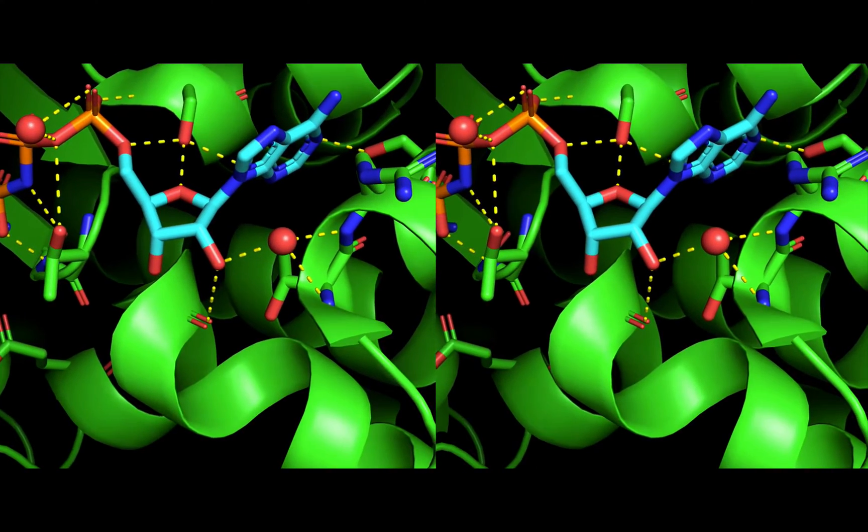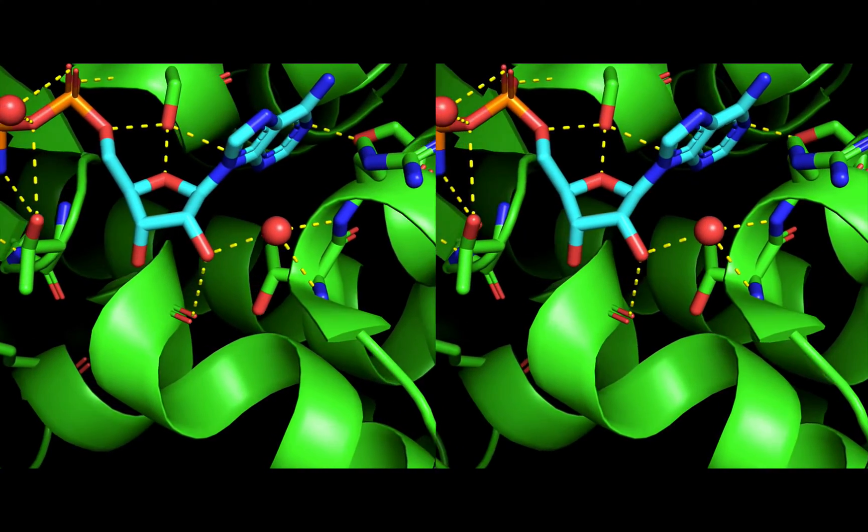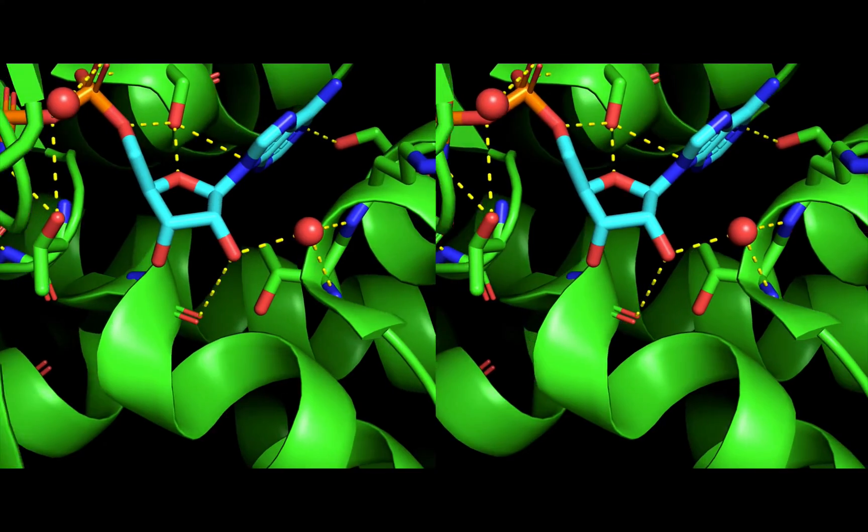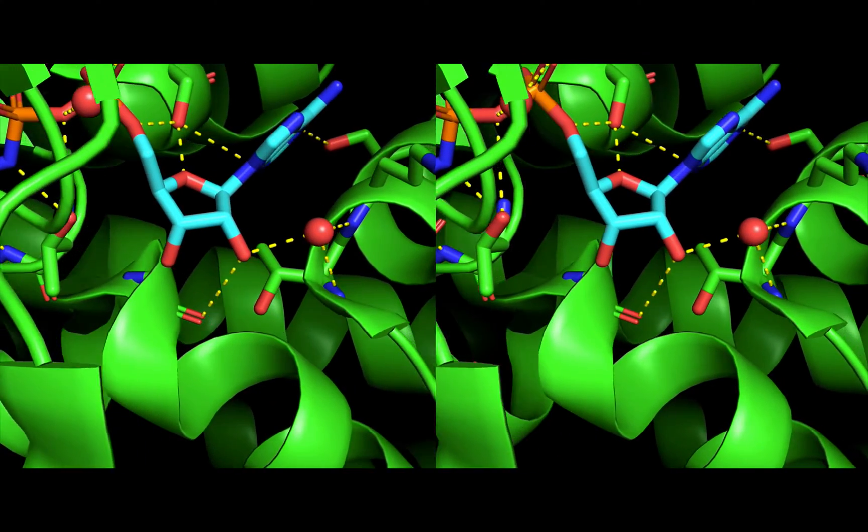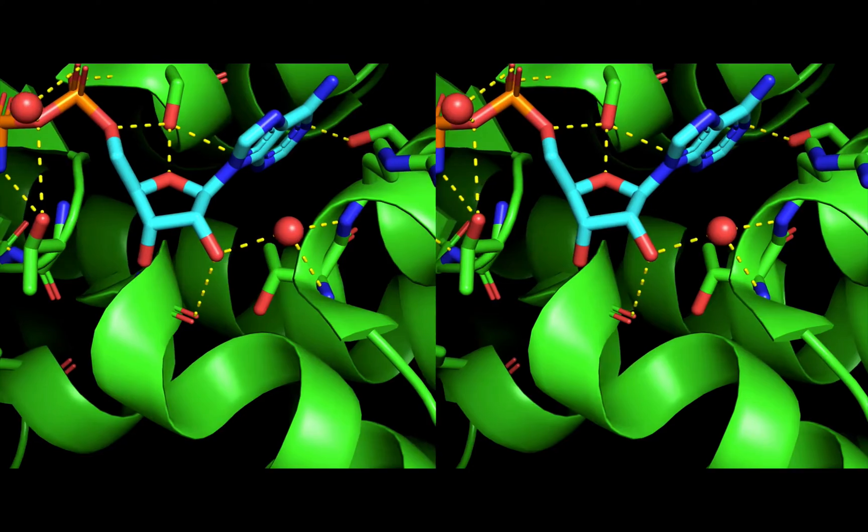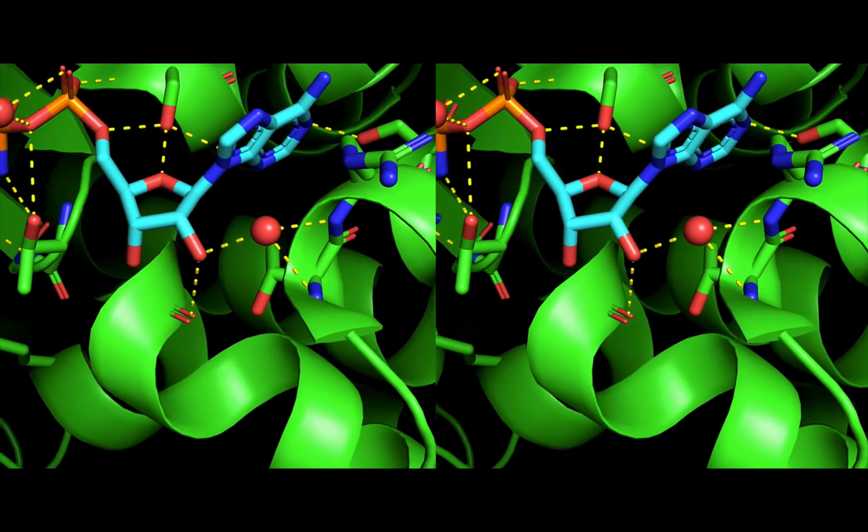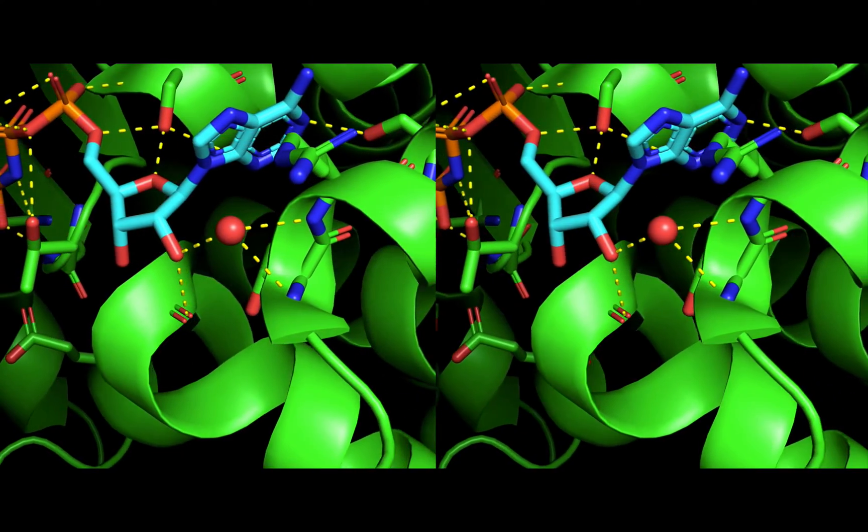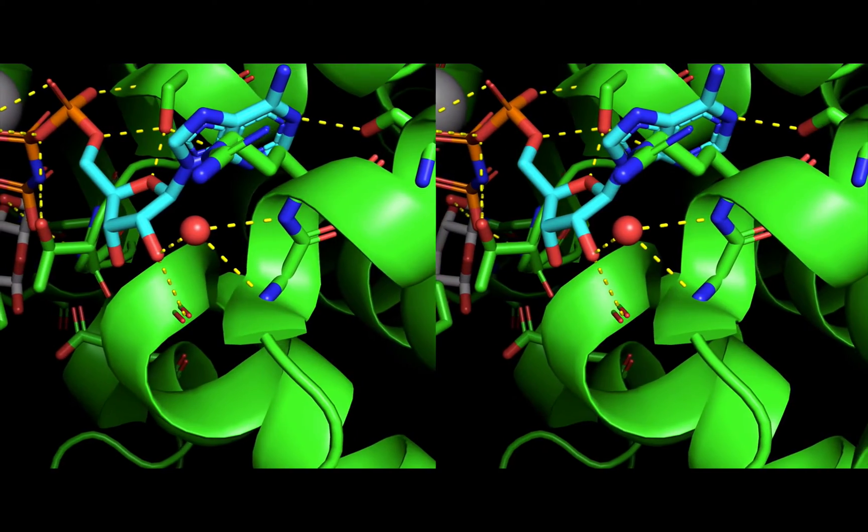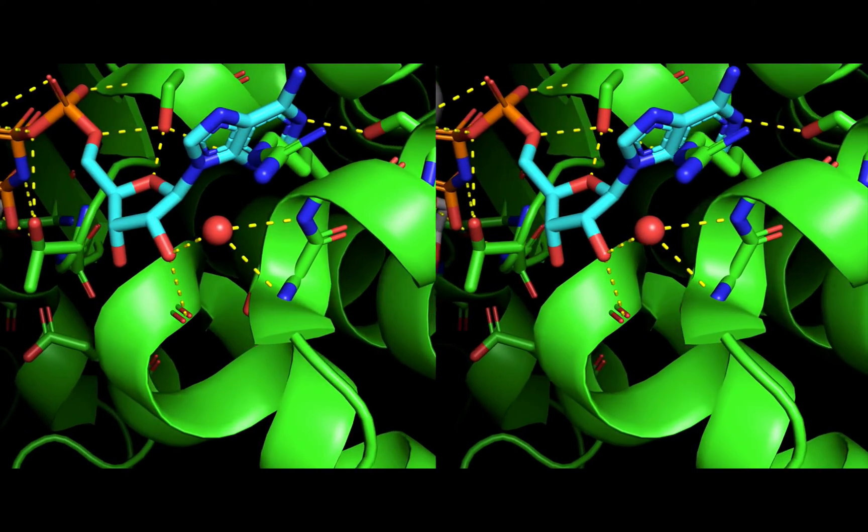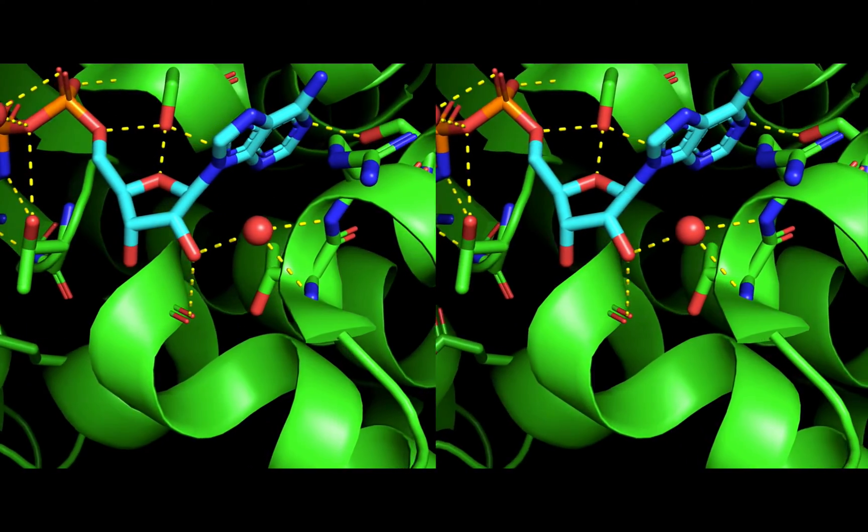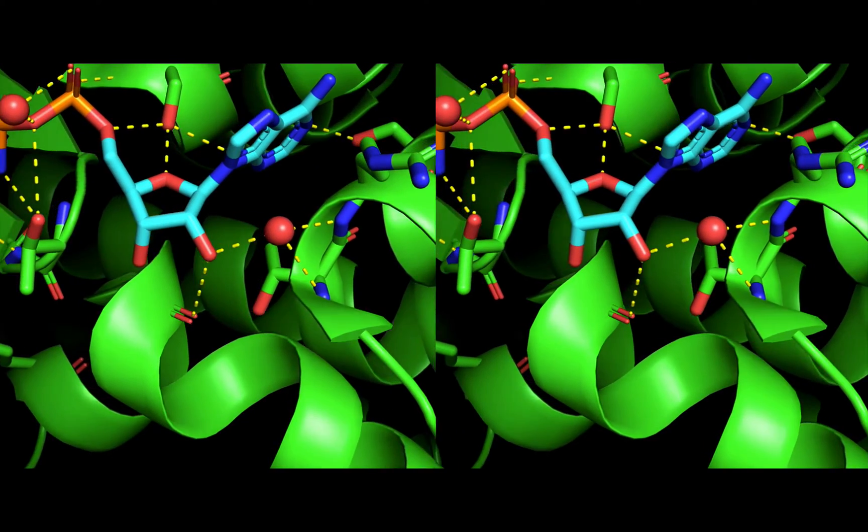Now here's ANP. It's also making hydrogen bonds to nearby amino acids, but here it's making a bond to a red sphere. That red sphere is a water molecule, and the water makes hydrogen bonds with the backbone of the enzyme. We call this a water-mediated hydrogen bond.